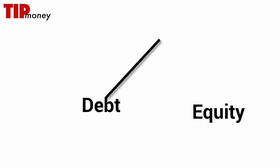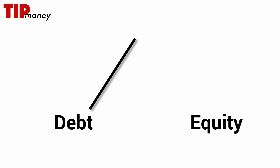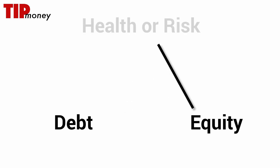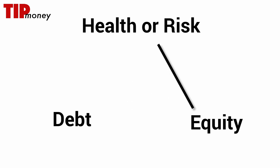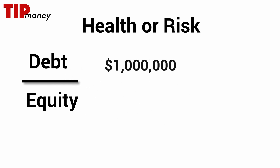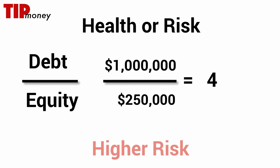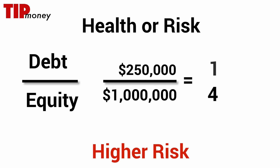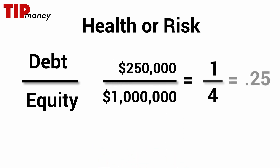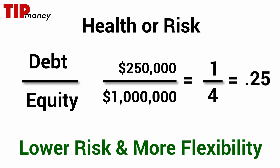When we compare these two numbers, we can get a general idea of the company's health or risk. When the debt compared to the equity is really high, this is a company that has more risk. When the debt compared to the equity is low, the company has more flexibility to implement new projects and adjust to a competitive marketplace.